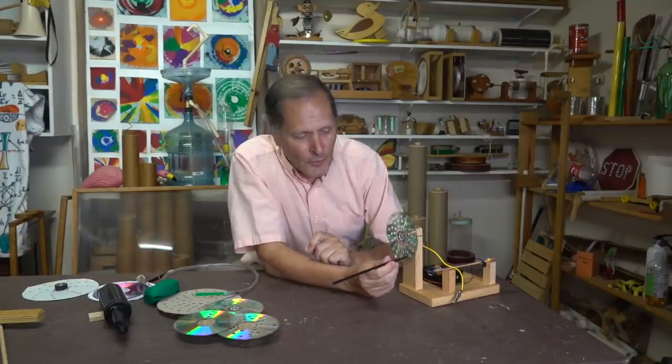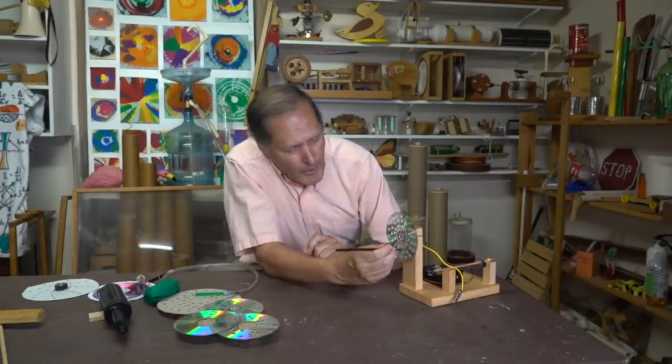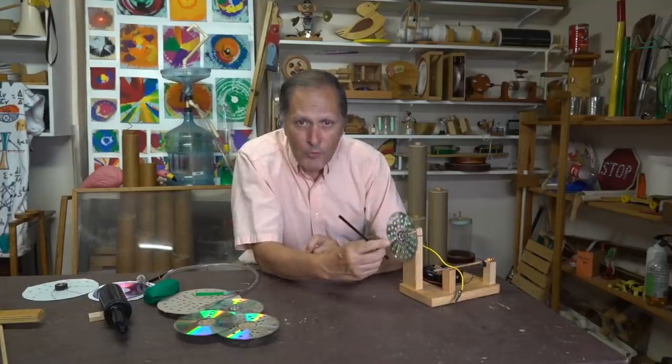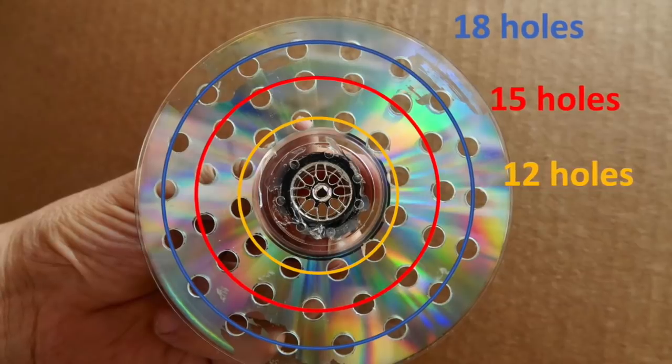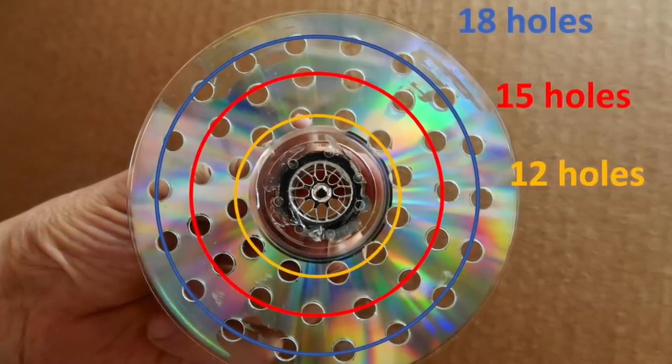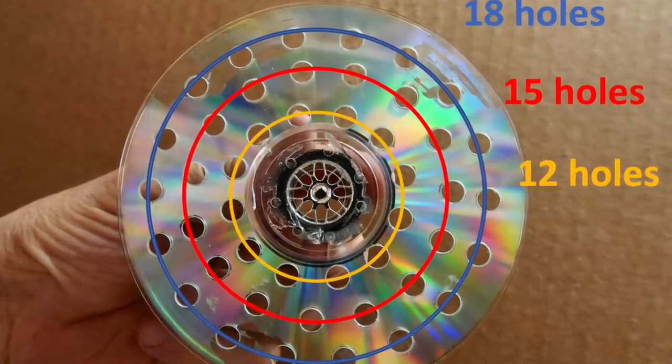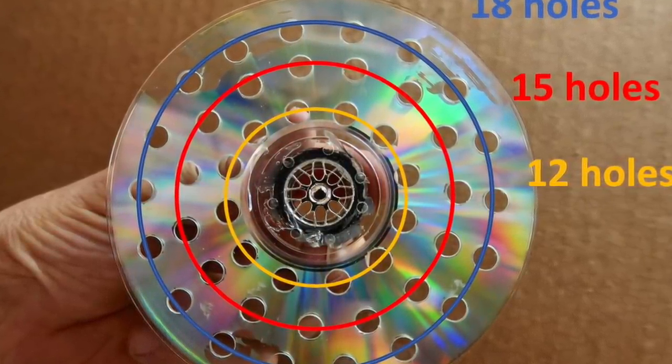You notice that the pitch changed as I went from one row to the next. That's because this outermost ring has 18 holes in it, the middle row has 15 holes, and the inner row has 12. So the more disturbances for every turn of the wheel, the higher the pitch.